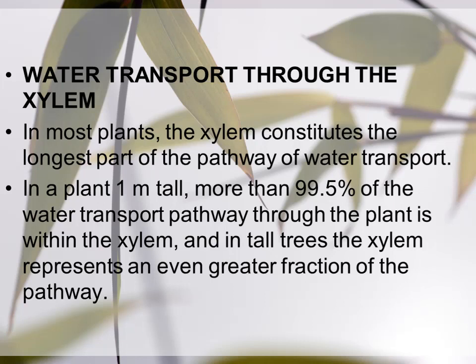In all vascular plants, the water transport process occurs mostly through the xylem. For example, if a plant has a height of one meter, then 99.5% of the water transport in that plant occurs through the xylem — from roots to different parts like stem, branches, and leaves. The remaining 0.5% occurs through osmosis and different processes.